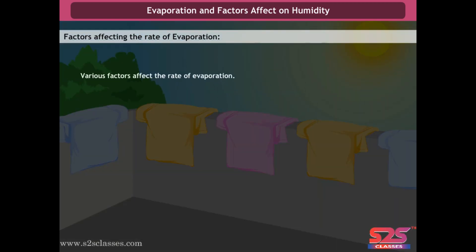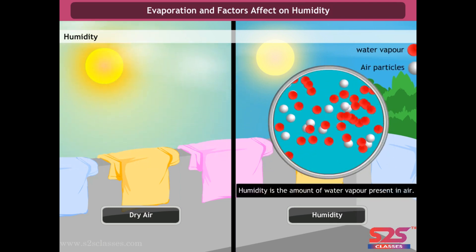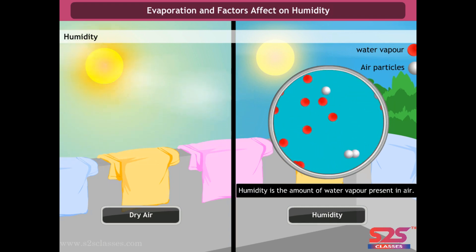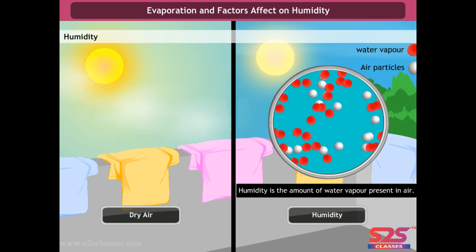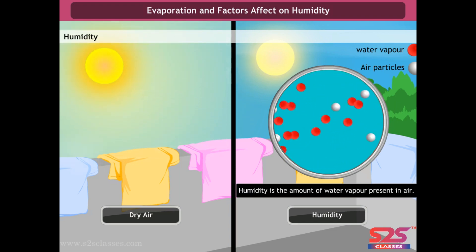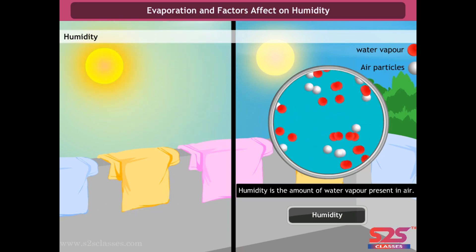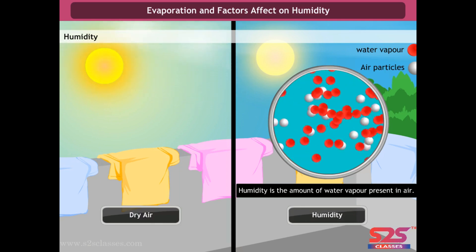Various factors affect the rate of evaporation: humidity, temperature, wind speed, and surface area. Humidity is the amount of water vapors present in the air — air can hold only a certain amount of water vapors at a particular temperature. If humidity is high, there is no space for more vapors, so wet clothes dry faster on a sunny day than in high humidity. Hence the rate of evaporation decreases with increased humidity.